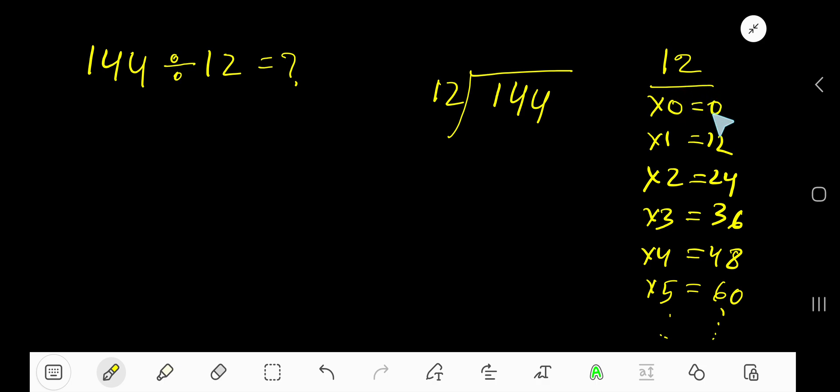To find the multiplication table of 12, just add 12 with the previous step: 0 plus 12 is 12, 12 plus 12 is 24, 24 plus 12 is 36, 36 plus 12 is 48, 48 plus 12 is 60. 12 goes into 1 how many times? 0 times.